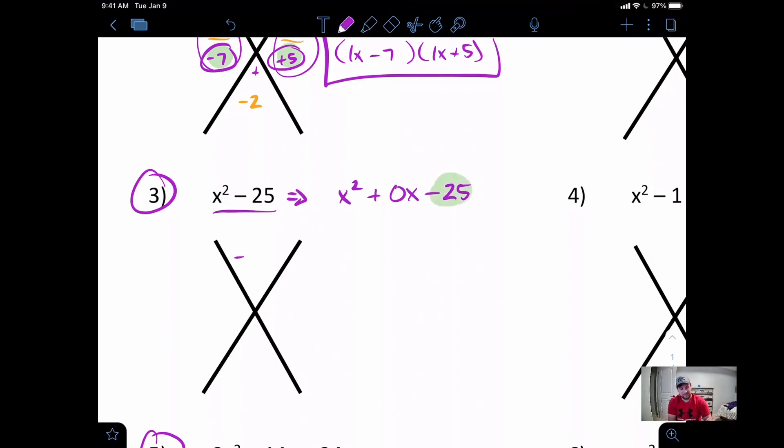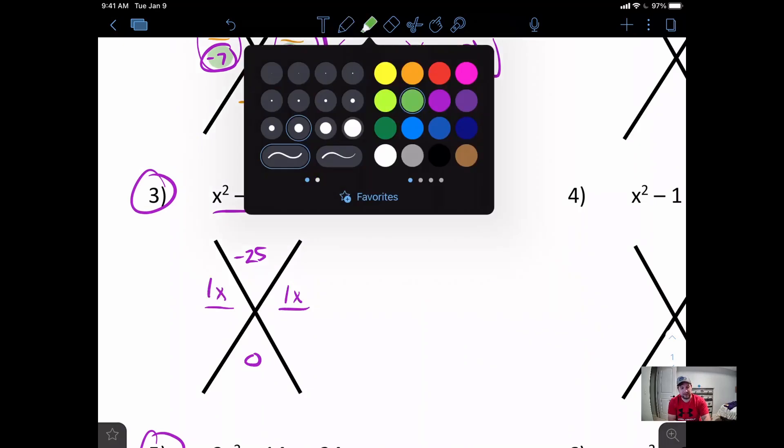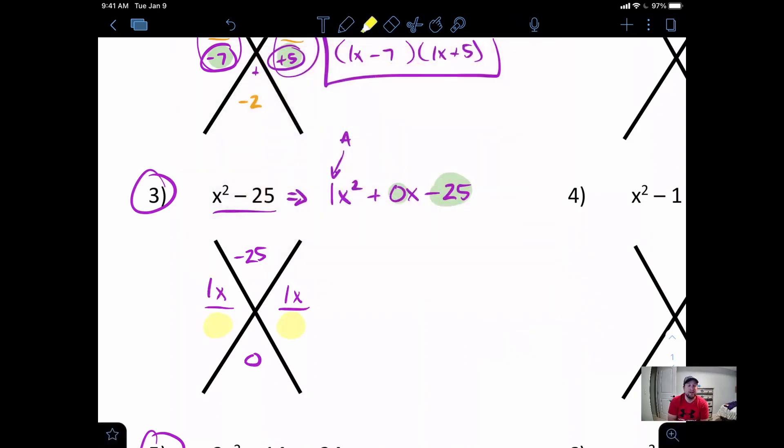We'll take our negative 25, that's what's going to go up on top. We'll take our 0, that's what we're going to put on the bottom. Our a value here is 1, so I'm going to have 1x and 1x. And now we are just looking for the two numbers that multiply to give us negative 25 that add to give us 0. And in this case, multiply to be negative 25, add to be 0, I think I would get a negative 5 and a positive 5. Should check out. They multiply to give us this and they add to give us this. So as soon as I get those numbers, then I want to come over here and write out my factored form. So 1x minus 5 and 1x plus 5, making this my final answer.